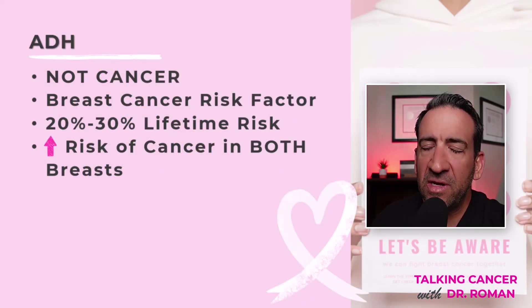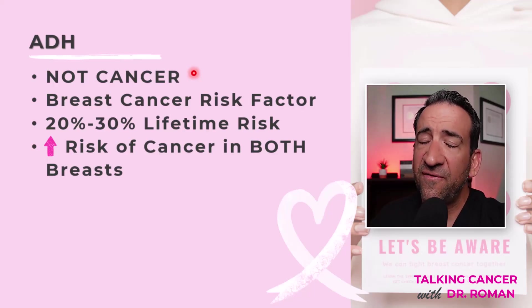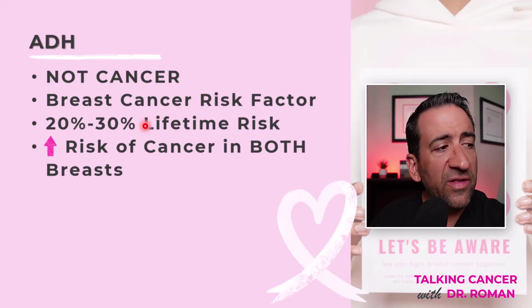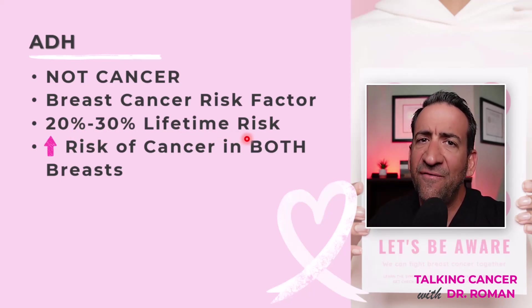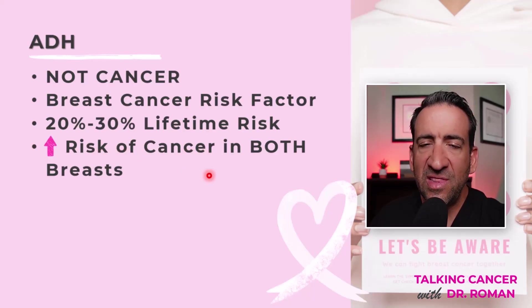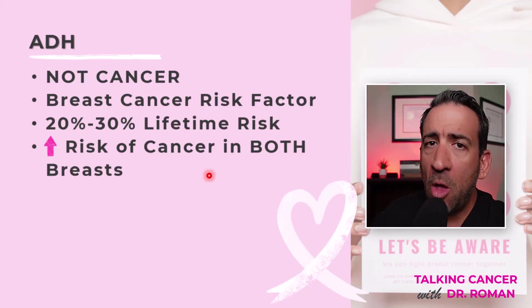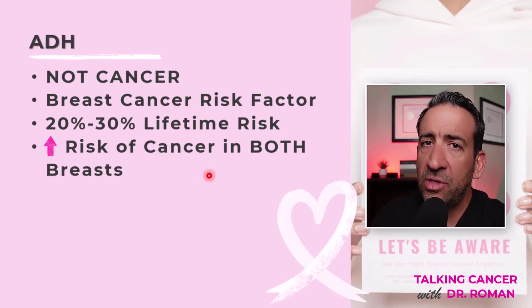Atypical ductal hyperplasia is not a breast cancer, but it is a risk factor for developing breast cancer in the future — and that's why you need to be on top of this. Your risk is roughly a 20 to 30 percent lifetime risk, though this is a rough estimate that really varies. Importantly, the risk increases in both breasts, not just the area where you had the biopsy, and that's why it's so important to know this.